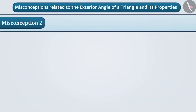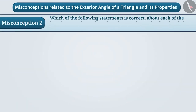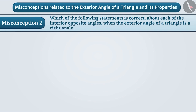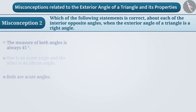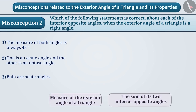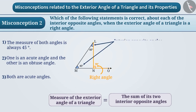Misconception 2: When the exterior angle of a triangle is a right angle, which of the following statements is correct about each of the interior opposite angles? We know that the measure of the exterior angle of a triangle is equal to the sum of its interior opposite angles. Some students believe that if the exterior angle is a right angle, then the interior opposite angles will be equal — that is, they will always measure 45 degrees.